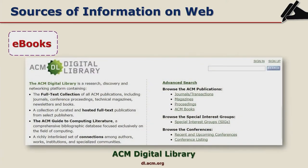There are also sources of information on the web that provide e-books. This is the ACM Digital Library — e-books are available through Google as well as digital libraries like ACM Digital Library. This is a snapshot of ACM Digital Library, where full e-books will be available to the researcher free of charge.